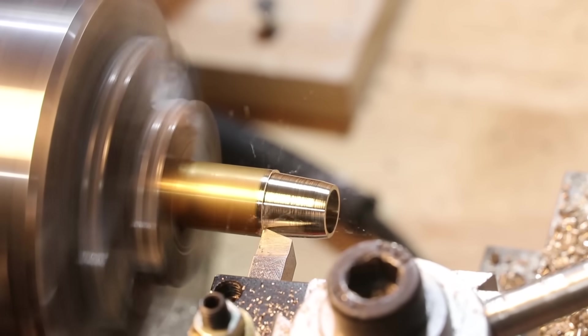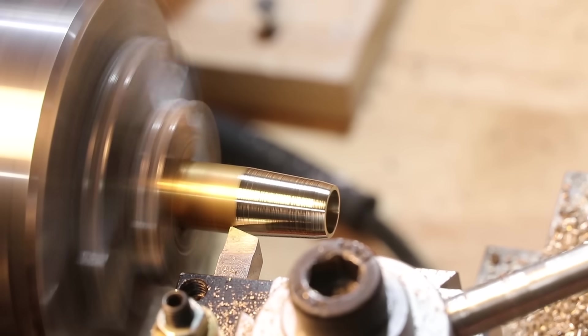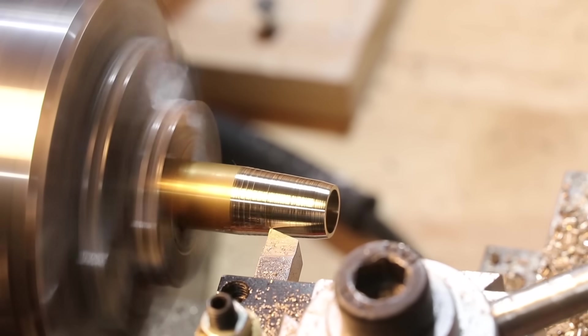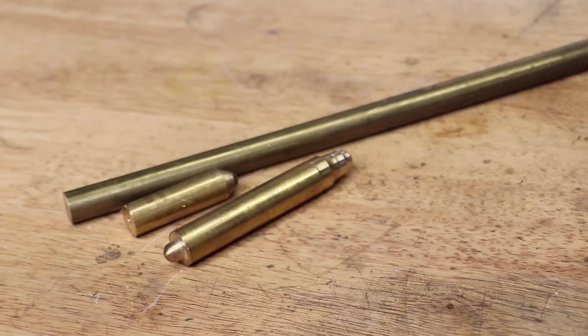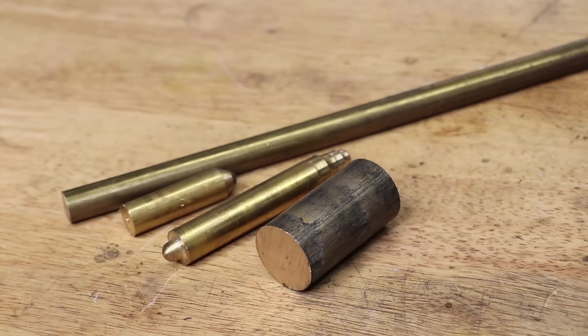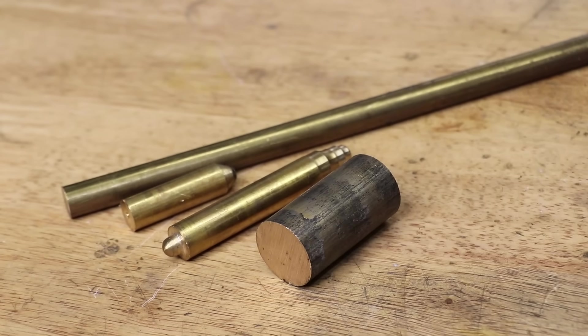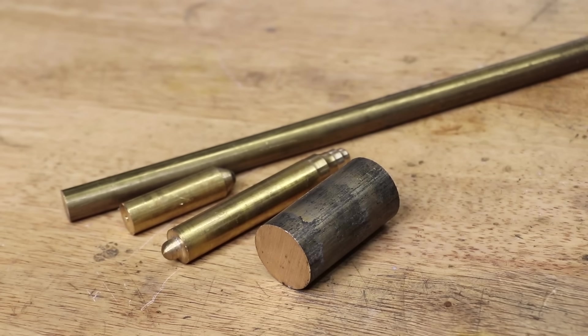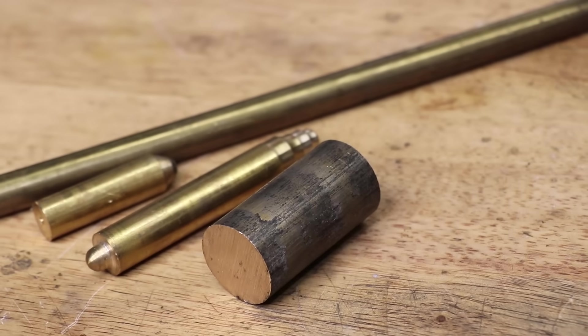The only downside to brass, apart from the cost, is it can easily work harden and crack, and it's not immune to corrosion. A very similar metal to brass is bronze. Whereas brass is a mix of copper and zinc, bronze is a mix of mostly copper, a bit of tin, and sometimes with zinc added.